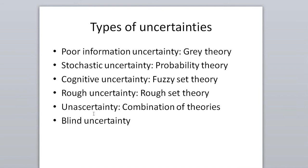Next is cognitive uncertainty — the kind of uncertainty that varies with the thinking level of people. For example, the concept of a 'young man': for one person, a young man may be between 25 and 40 years; for another, it may be between 20 and 30. This variation exists at the level of cognition. We call this cognitive uncertainty, and fuzzy set theory is the best theory to handle this kind of uncertainty.